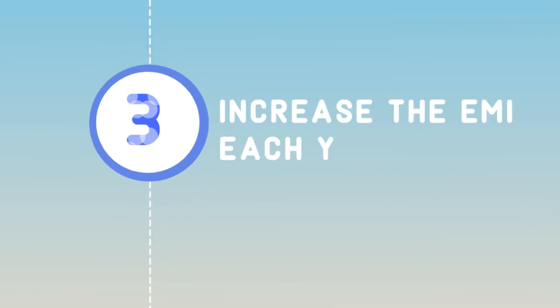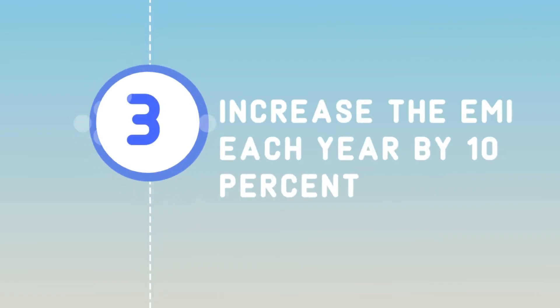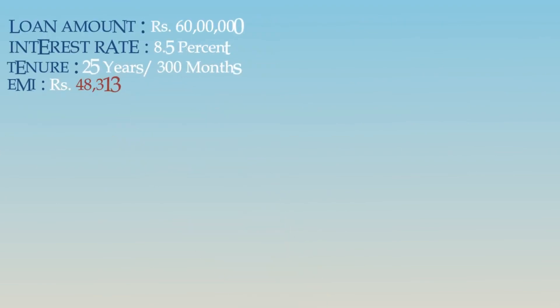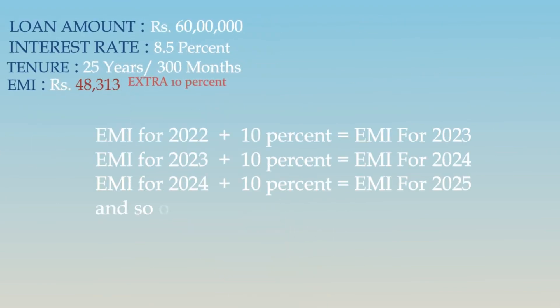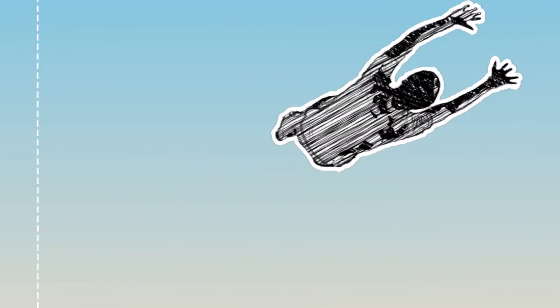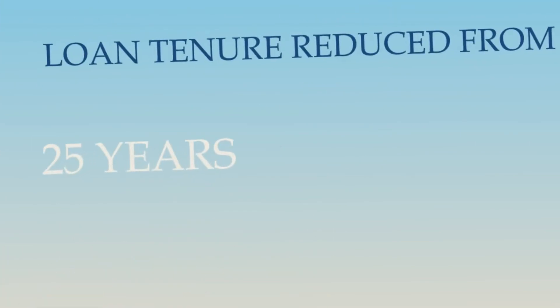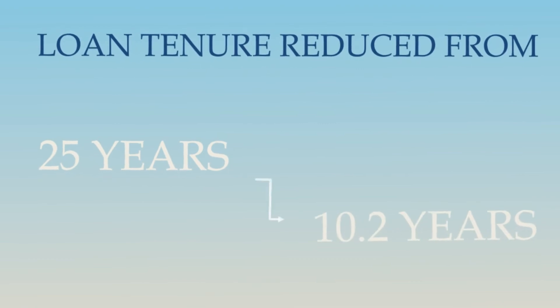The third and final option is similar to the second option. Charlie will have to increase his EMI every year by 10%. That will reduce his loan tenure to 10 years and 2 months.